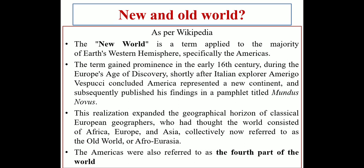So this new world term was used in the early 16th century just after Europe's age of discovery by Italian explorer Amerigo Vespucci, and he published this word in the pamphlet Mundus Novus. This realization expanded the geographical horizon of classical European geographers, who were not knowing about the new world at that time. They were thinking only that the world consisted of Africa, Europe, and Asia — collectively known as the old world, also referred to as Afro-Eurasia.